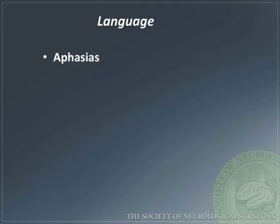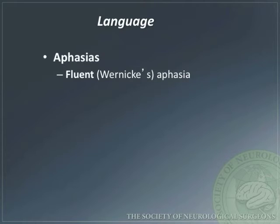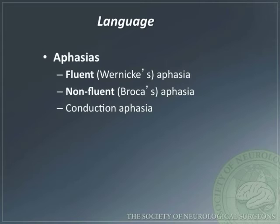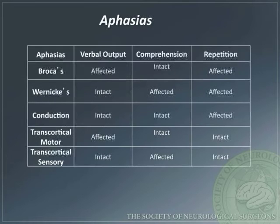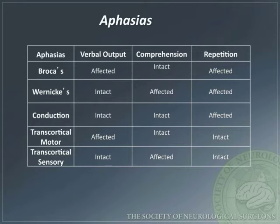Abnormal language can be described by types of aphasia. Wernicke's, which is fluent. Broca's, which is non-fluent or expressive. Conduction, which is a problem with repetition. Transcortical aphasia is also a recognized type. The key points are that Wernicke is a problem with understanding, Broca is a problem with speech output, conduction is a problem with repetition, and transcortical aphasia involves problems with understanding or speech output yet with intact repetition.